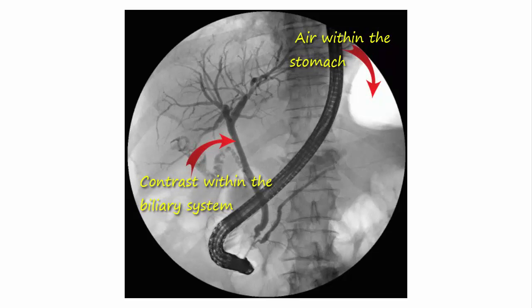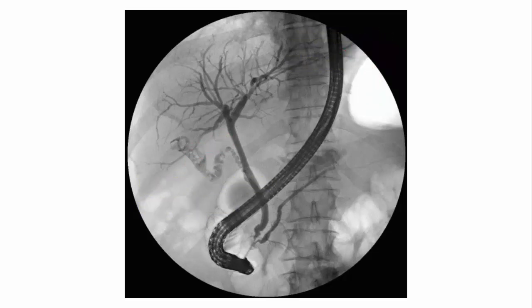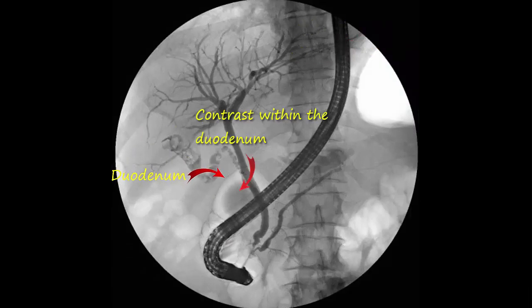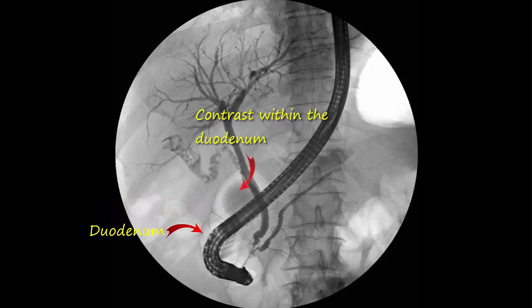Many times radiologists like to see fluoroscopic images with inverted grayscales. This is air within the stomach, and this is air in the duodenum. Some contrast has leaked into the duodenum, which is making the outline of the duodenum clearly visible. The injected contrast combined with the air in the duodenum is creating what is known as a double contrast study.